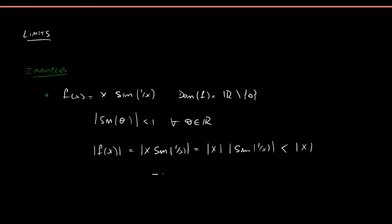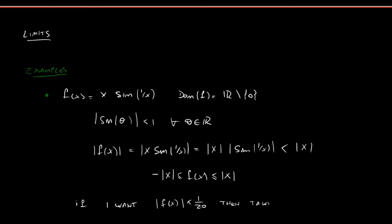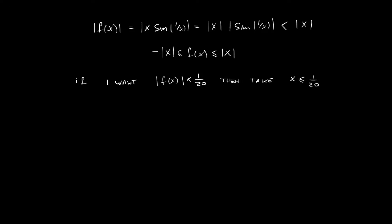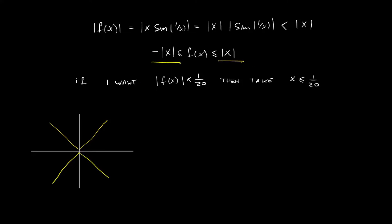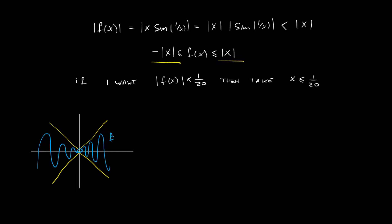What this tells us is that our function is between -|x| and |x|. So if I want my function to be smaller than, say, 1/20, all we have to do is take x smaller than 1/20. The plot of our function looks something like this — drawing the axis, |x| looks like a V-shape, -|x| the reflection, and f is bounded between these two plots, though it's not defined at zero.